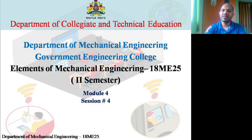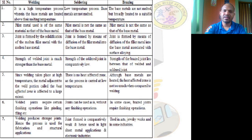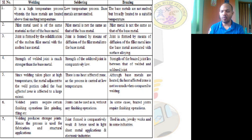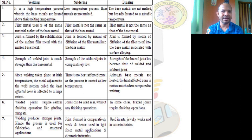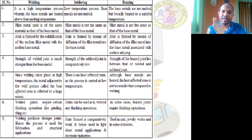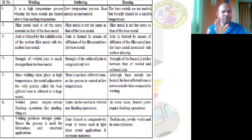In welding, a high-temperature process is used wherein the base metals are heated above their melting temperature. In soldering, it is a low-temperature process where the base materials are not melted. In brazing, the base metals are not melted but broadly heated to a suitable temperature. This is one of the major technical differences between welding, soldering, and brazing.